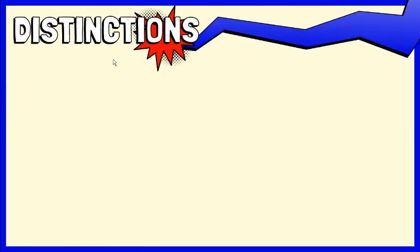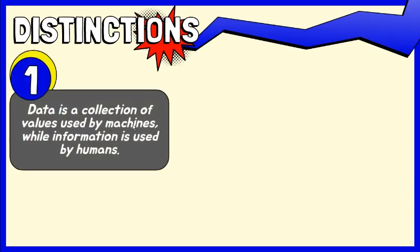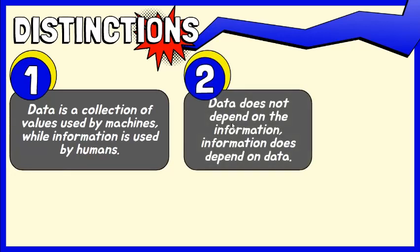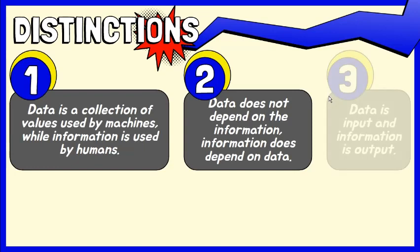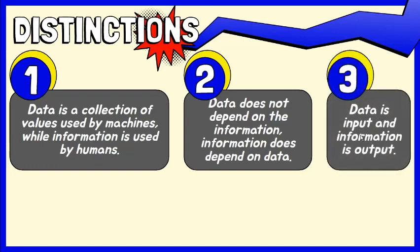Here are additional distinctions that show data and information are not interpreted as the same thing. First, data is a collection of values used by machines, such as computers, while information is used by humans. Second, data does not depend on the information. Information does depend on data. Third, data is input and information is output.